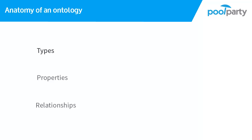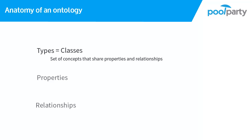In PoolParty, types are called classes. A class is a way to define a set of concepts that share certain properties or relationships. Once you have a class, you can say that all instances of that class are allowed to have a certain attribute, or that two classes can have a specific type of relationship. Classes can also have subclasses or be subclasses of other classes.